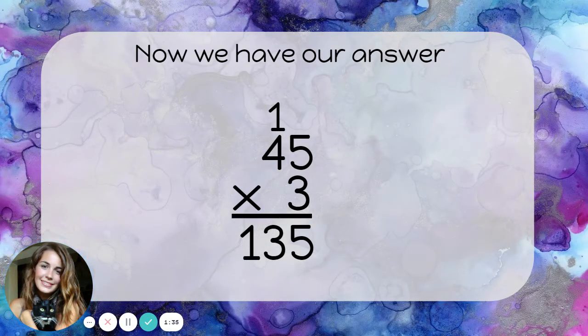13 can go down in my answer. Now, we have our answer. 45 times 3 equals 135.